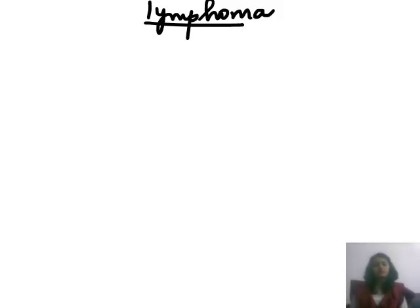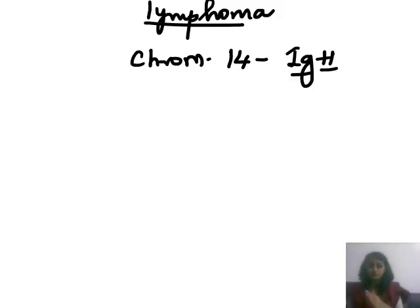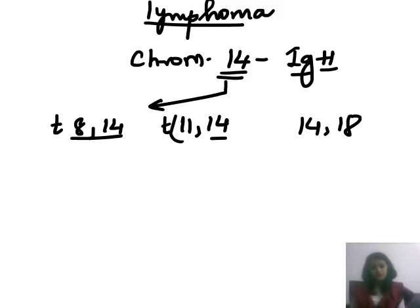A trick to remember the lymphoma translocations: the common chromosome is chromosome 14. On chromosome 14 there is the IGH gene, that is the heavy chain immunoglobulin gene. Once there is a translocation to chromosome 14, this immunoglobulin gene gets activated and produces lymphomas. The common translocations are 8;14, 11;14, and 14;18.